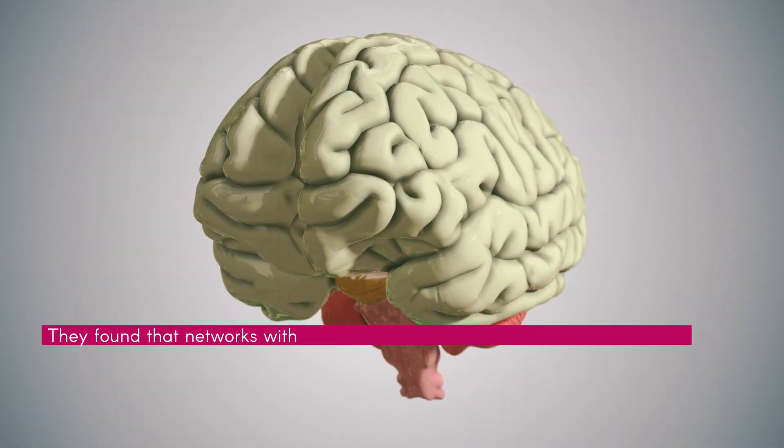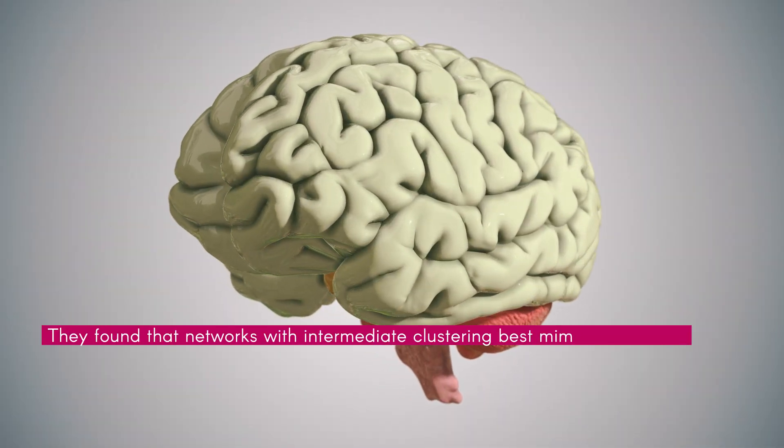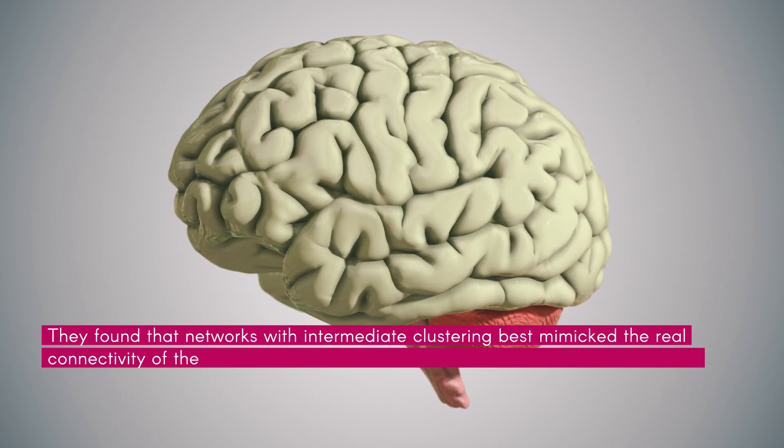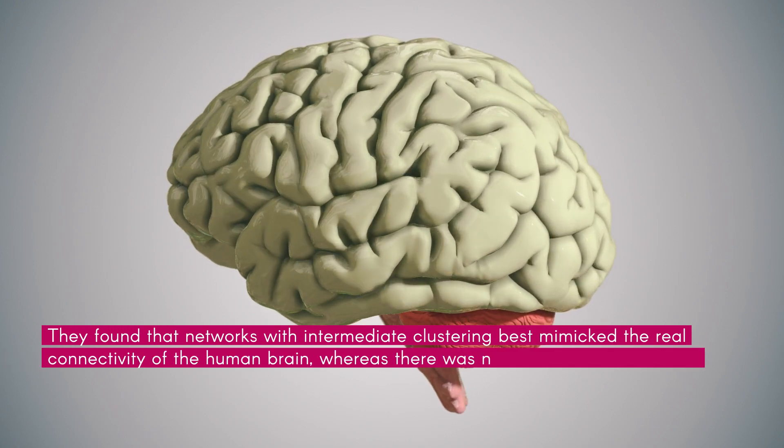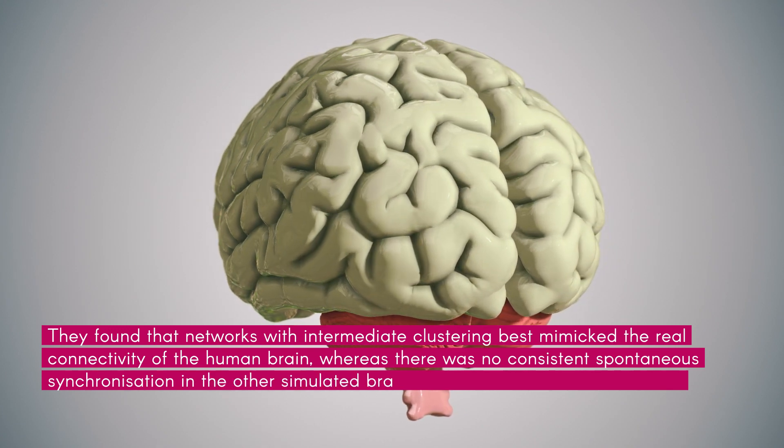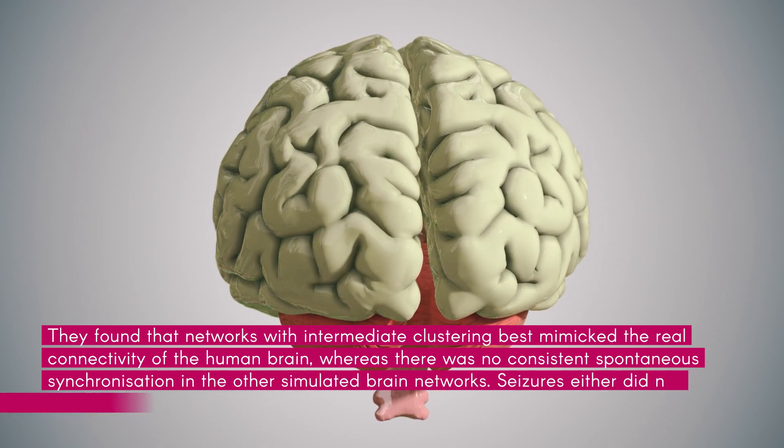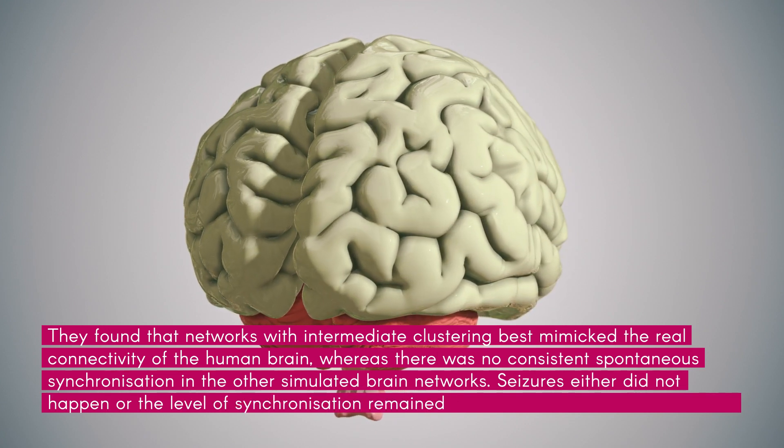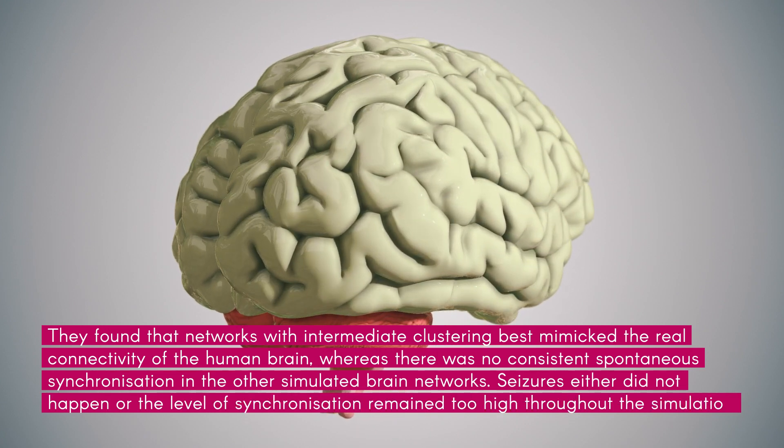They found that networks with intermediate clustering best mimicked the real connectivity of the human brain, whereas there was no consistent spontaneous synchronization in the other simulated brain networks. Seizures either did not happen or the level of synchronization remained too high throughout the simulation.